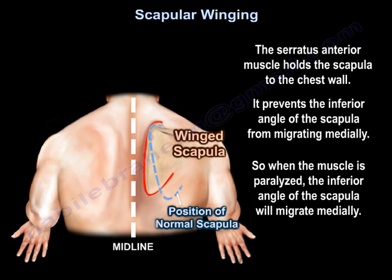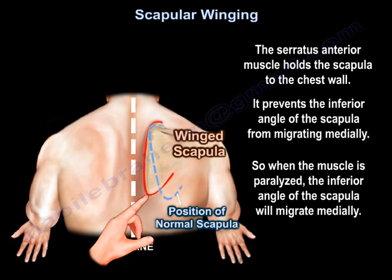So when the serratus anterior muscle is paralyzed, the inferior angle of the scapula will migrate medially.